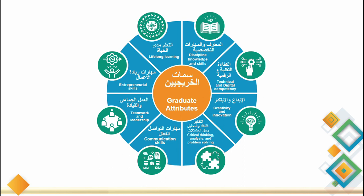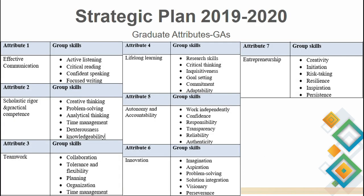Then I show them the graduate attributes. The current graduate attributes include communication skill, teamwork and leadership, lifelong learning, 21st century soft skills, creativity and innovation, and critical thinking. So we are doing what is already there in the graduate attributes. We are discussing the visions and discussing the reason for them to be in the class, to be at the institute. They should know that. I also show them the previous graduate attributes and group skills.